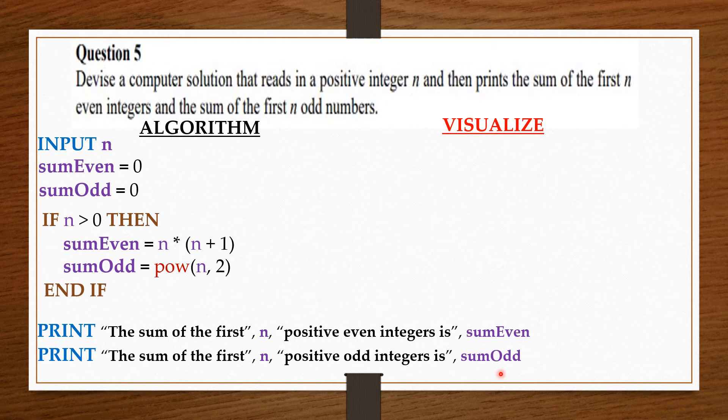Now how did I come up with these two formulas for sumEven and sumOdd? From the general arithmetic progression formula for summing numbers we have (n/2) times [2a + (n - 1)d], where a is the first term and d is the common difference.